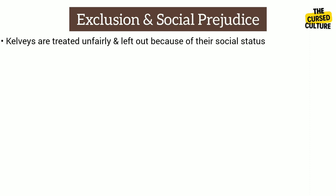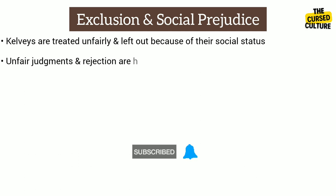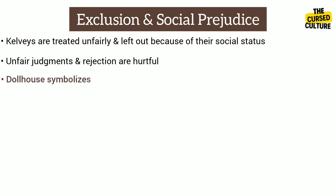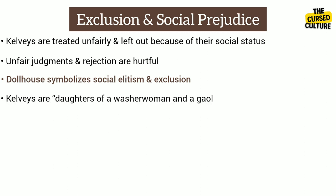In The Doll's House, the Kelvies are treated unfairly and left out because of their social status, suggesting the theme of exclusion and social prejudice. The story highlights how unfair judgments and rejection can be hurtful and wrong. The Kelvies — Lil' and Els — are excluded from seeing the beautiful dollhouse. Thus, the dollhouse symbolizes social elitism and exclusion. This exclusion happens because the Kelvies are considered different and common by the other kids — they are the daughters of a washerwoman and a jailbird, belonging to the low economic strata of society. This shows how social prejudice works.